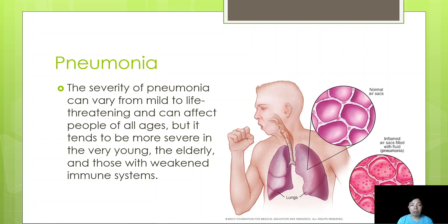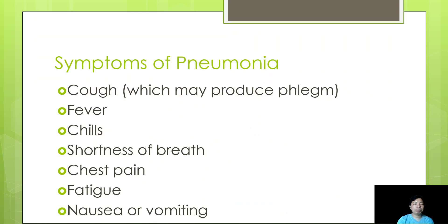The severity of pneumonia can vary from mild to life-threatening and can affect people of all ages. However, it tends to be more severe in the very young, the elderly, and those with a weakened immune system.